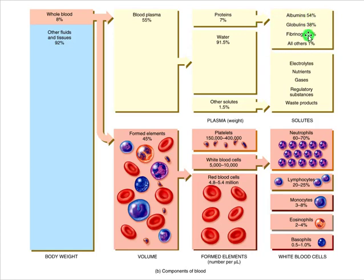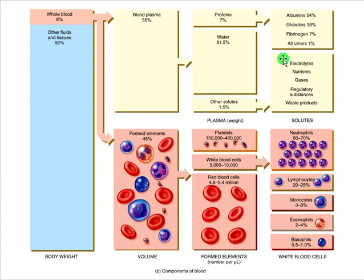Those proteins include albumins, globulins, fibrinogen, and some other miscellaneous things — I'll talk more about those in a later slide. You do have a bunch of proteins dissolved within blood plasma. What else is dissolved there? Electrolytes like potassium and sodium, various nutrients, gases like oxygen and carbon dioxide, regulatory substances like hormones, and waste products — all making up solutes dissolved within this plasma.